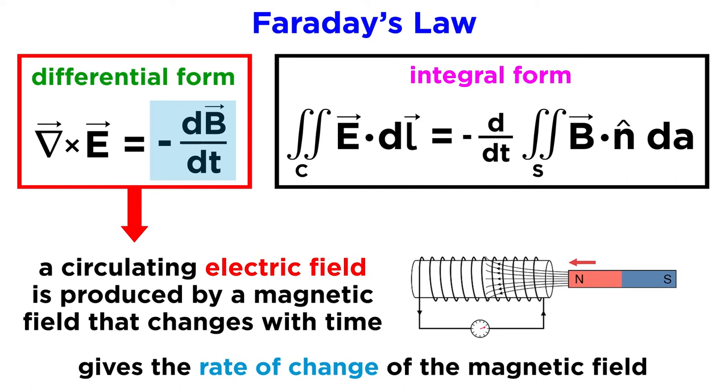The term on the right shows the rate of change of the magnetic field with respect to time, dB over dt. The negative sign is necessary for the induction to follow the right hand rule.